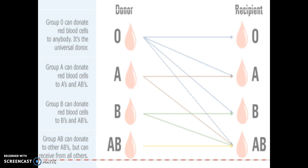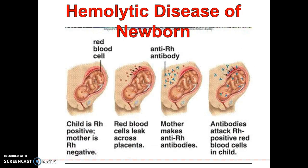Hemo refers to blood, and lytic means to break. The first baby born to the mom — no problems. If the first baby happens to be type AB blood and the mom is type A, she does not recognize B as part of her body. The blood cells don't pass through to the mom. The mom's nutrients and oxygen pass through to the baby. As the baby is born, though, the blood barrier is broken, and now the baby's red blood cells are introduced into the mother's blood, and she sees the baby as being a different blood type.